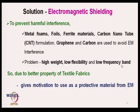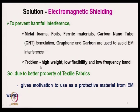The best solution is to shield all this electromagnetic radiation. To prevent harmful interference, metal foams, foils, ferrite materials, carbon nanotube formulations, and graphene carbons are used to avoid this interference. However, the main problem with these materials is that they are heavier in weight, not flexible, and they work in a low frequency band. The best alternative is textile material, as textile fabrics have better properties that people use to protect themselves from electromagnetic radiations.